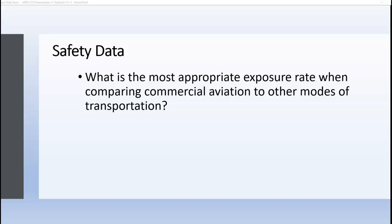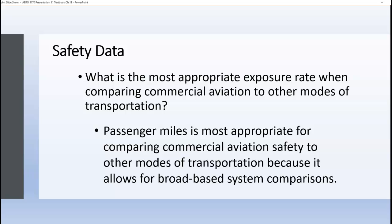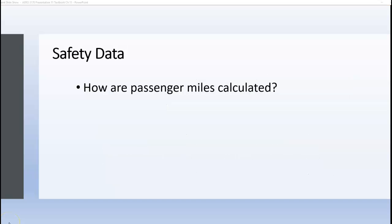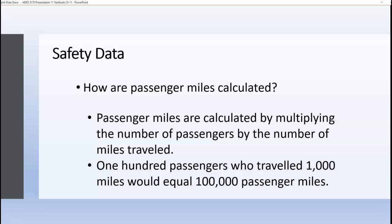The most appropriate exposure rate when comparing commercial aviation to other modes of transportation would be passenger miles. Comparing passenger miles is most appropriate because it allows for broad-based system comparisons. Passenger miles are calculated by multiplying the number of passengers by the number of miles traveled — for example, 100 passengers traveling 1,000 miles equals 100,000 passenger miles.